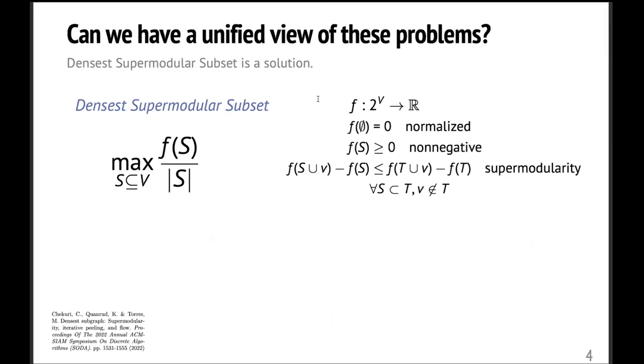So since there are numerous variants of densest subgraph, can we have a unified view of these problems? Recently, Chakuri, Kuanrud and Torres provide a unified view of these problems. Basically, they consider the densest supermodular subset problem, which maximizes the fraction f(S) divided by the size of S. So here, F is a set function defined for any vertex set. And F is assumed to be non-negative, normalized, and supermodular.